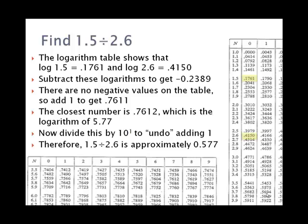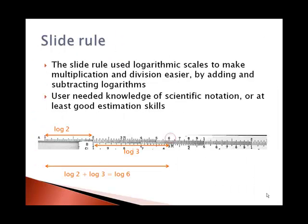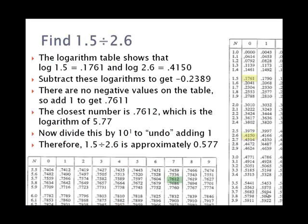When we add 1 to that negative .2389, we get .7611. The number closest to that is .7612 on the table, or the logarithm of 5.77. Now we added 1 to find this number. To take care of that, we'll now divide by 10 to the first power to undo that, and so we'll say that the quotient is .577.